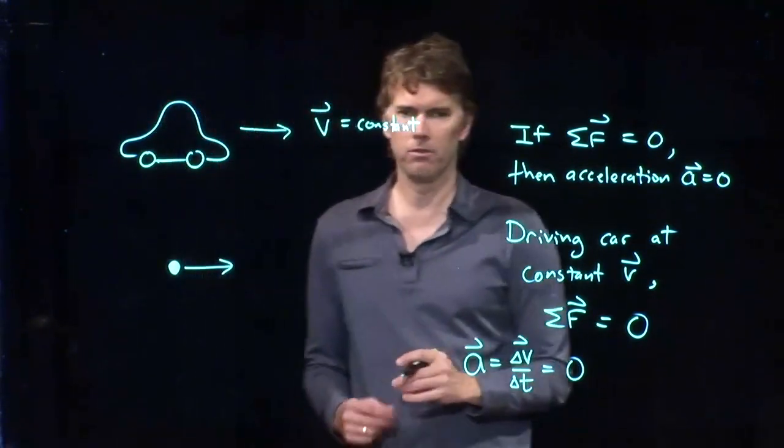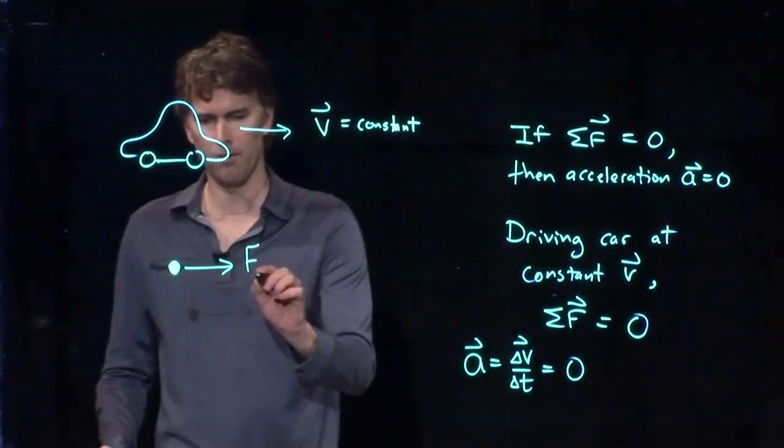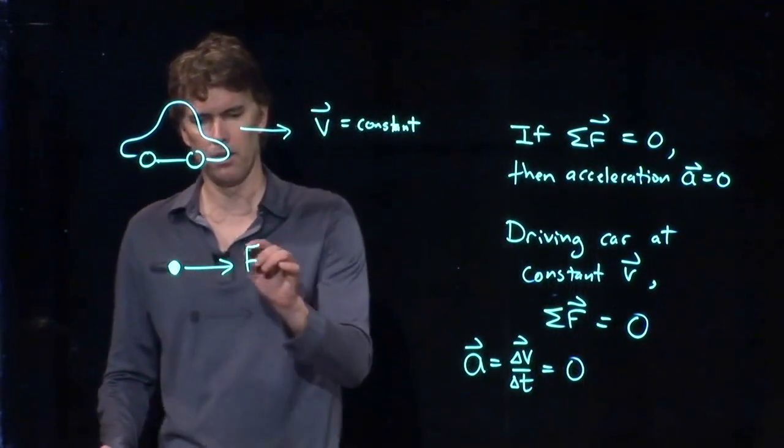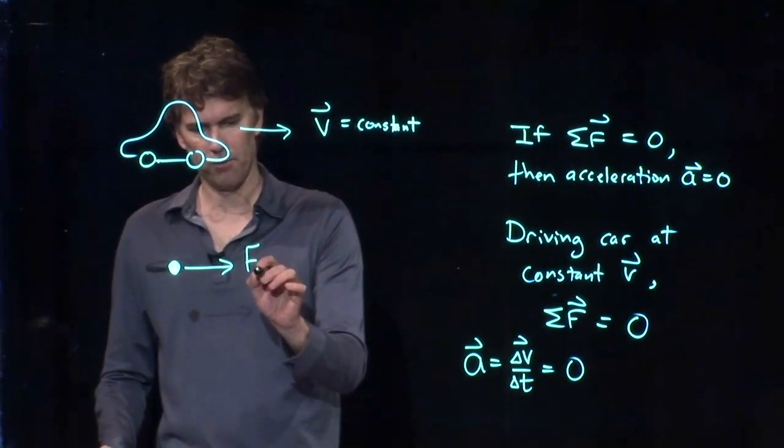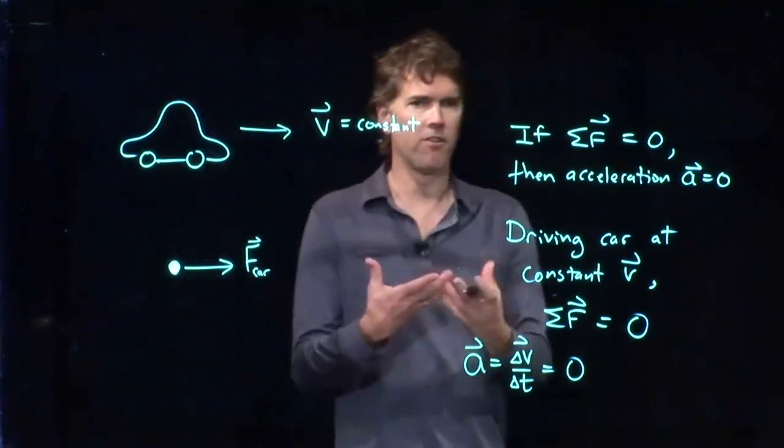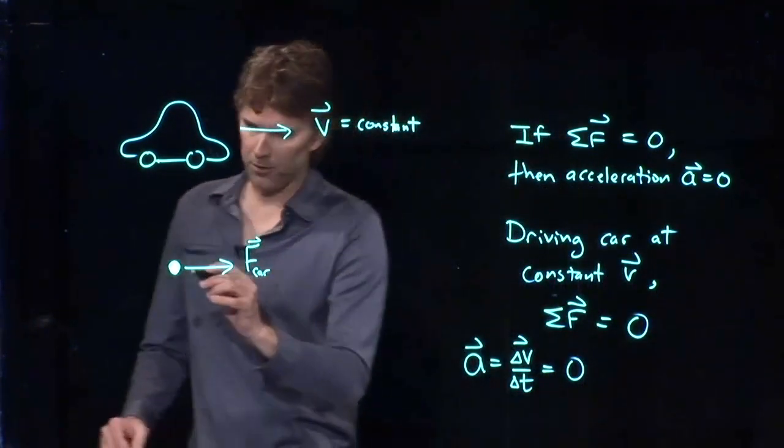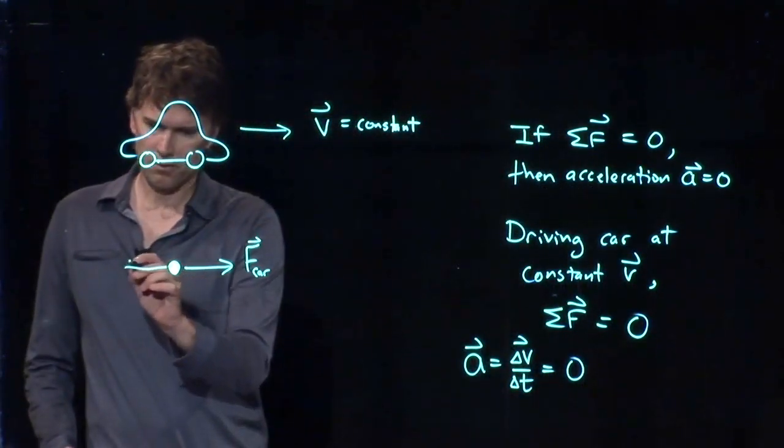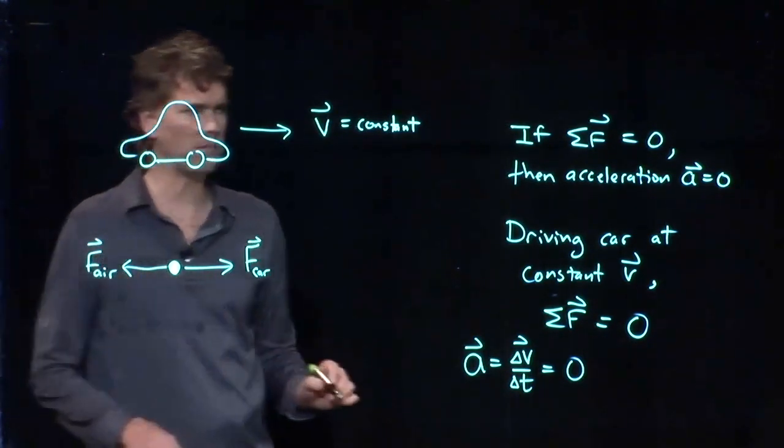I change my car to a dot and now identify the forces that are acting on the car. There's a force pushing it forward, which is the force of the engine acting on the drive shaft, acting on the wheels, acting on all that stuff. And so this is the force, let's call it the force from the car itself. But Sean said there's also air resistance, which is the opposite direction.